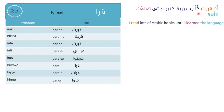First example: 'Ana riit kutub arabiya k'teer la hatta ta'alamat il-lughah' — I read Arabic books a lot until I learned the language. 'Kutub arabiya' means Arabic books, 'k'teer' means a lot, 'la hatta' means until, 'ta'alamat' means I learned, 'il-lughah' means the language.